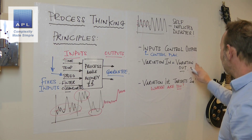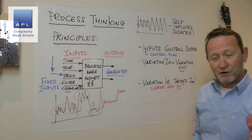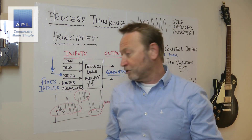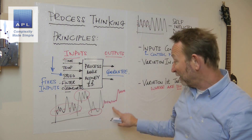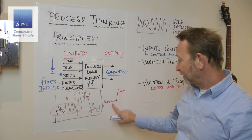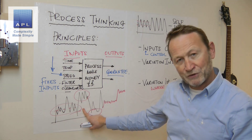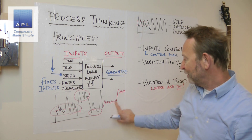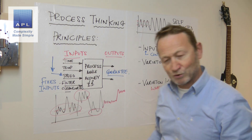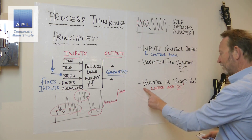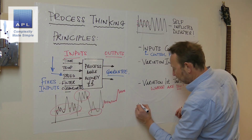Inputs control outputs, variation in equals variation out, I'm always going to tackle variability first, and then I'll worry about hitting targets second. By the way, adjusting a target is easy to fix — that takes minutes to sort out. But sorting out variability takes months. So getting rid of variation first is super important.